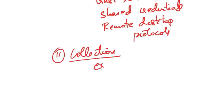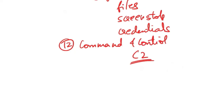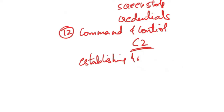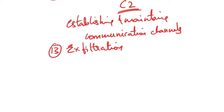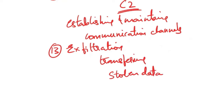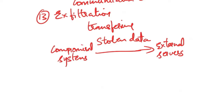Next is collection — gathering and exfiltrating sensitive data from compromised systems, such as stealing files, capturing screenshots or extracting credentials stored in memory. Next is command and control (C2) — establishing and maintaining communication channels between the adversary's infrastructure and compromised systems to remotely control them, deliver commands and exfiltrate data. Next is exfiltration — transferring stolen data to external servers using encrypted channels, hiding data within legitimate traffic or compressing files to evade detection.